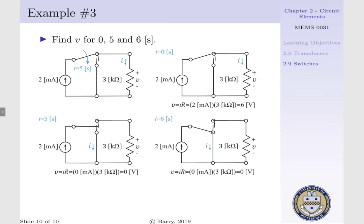Lastly, when time T equals 6 seconds, we see that our switch is completely in contact with the bottom terminal of our single pole double throw switch.